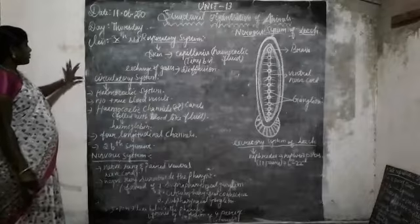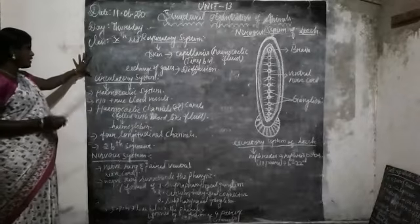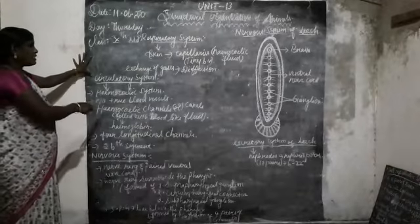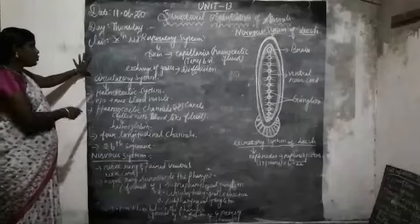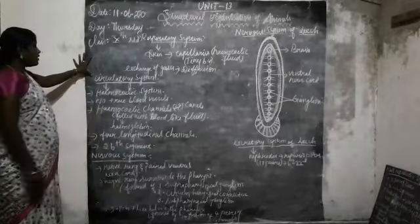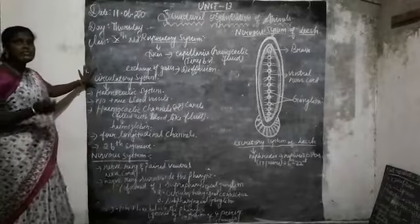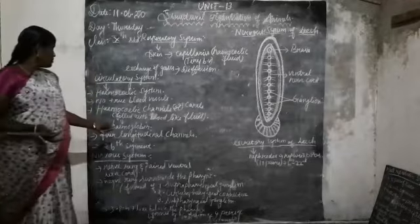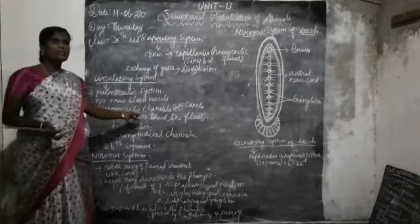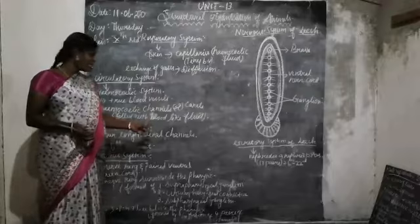Now I want to talk about the circulatory system. The circulation takes place through the haemocoelic system. There are no blood vessels. Instead of blood vessels, they have haemocoelic channels or haemocoelic canals.